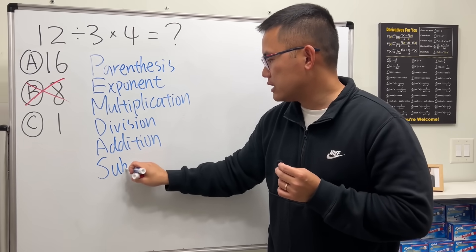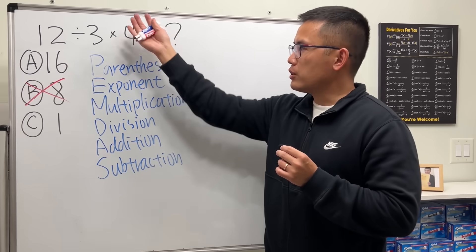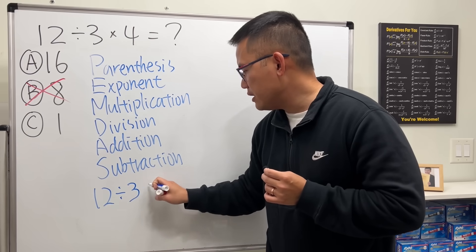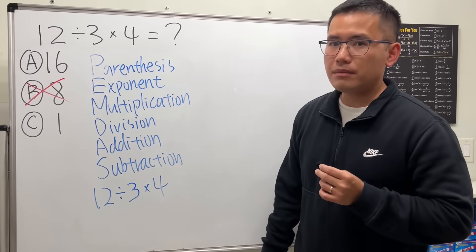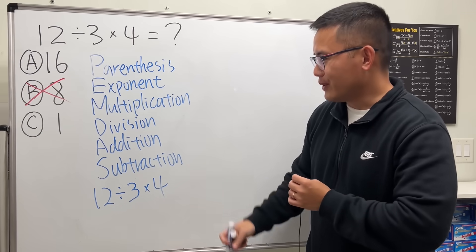A stands for addition and lastly S stands for subtraction, which is focusing on multiplication and division. So let me write that down again: 12 divided by 3 times 4. By the way, 1, 2, 3, 4, I picked that number on purpose.